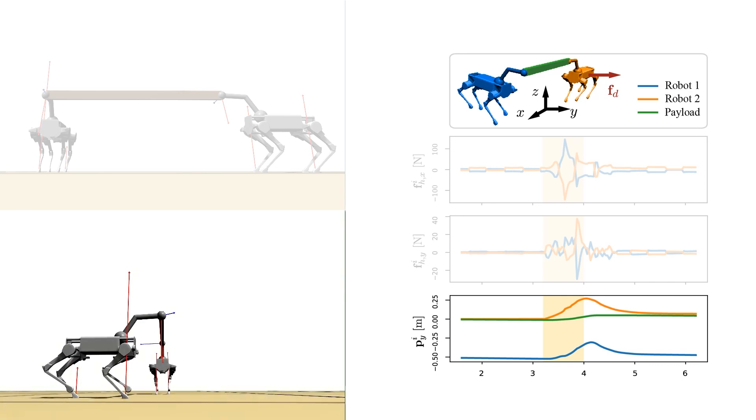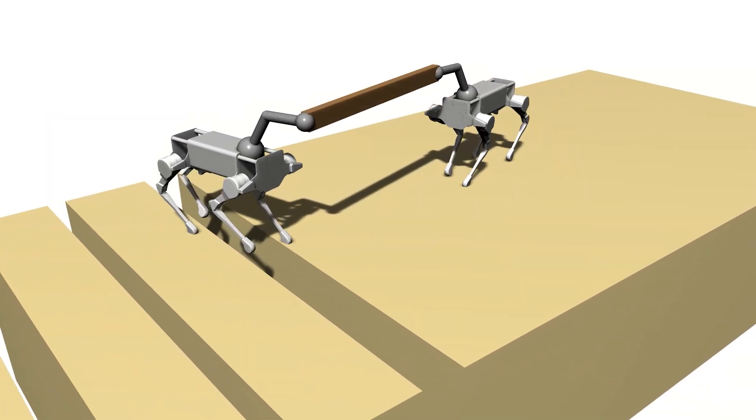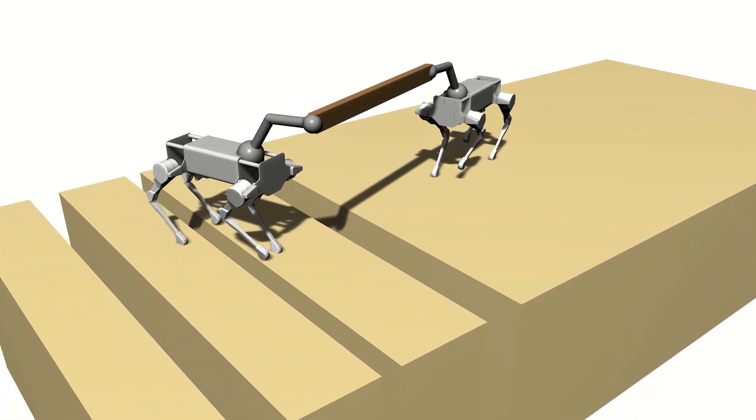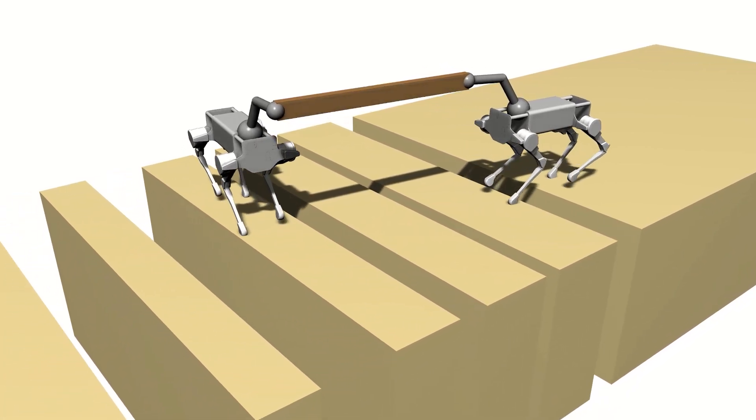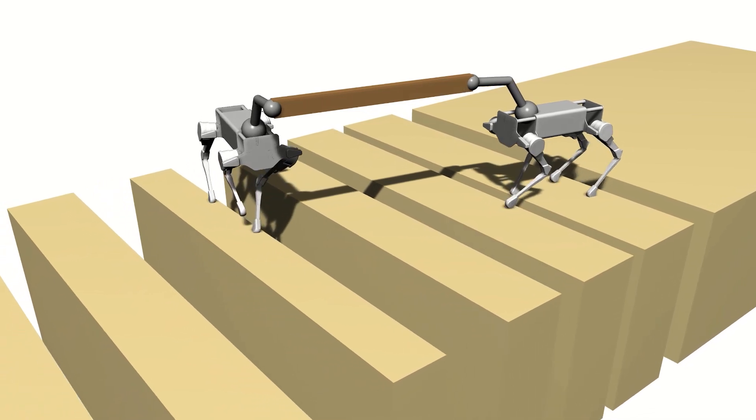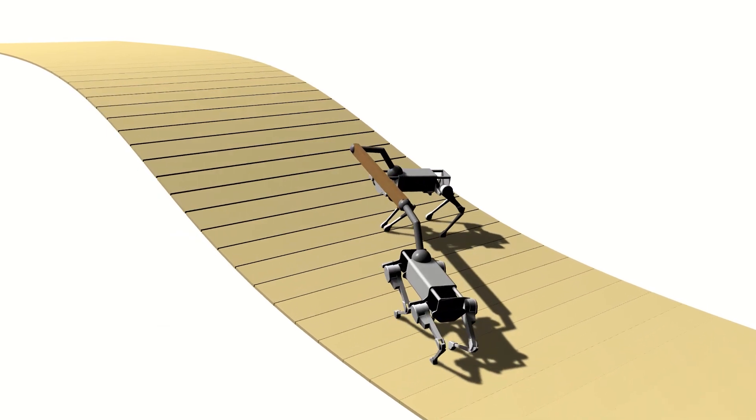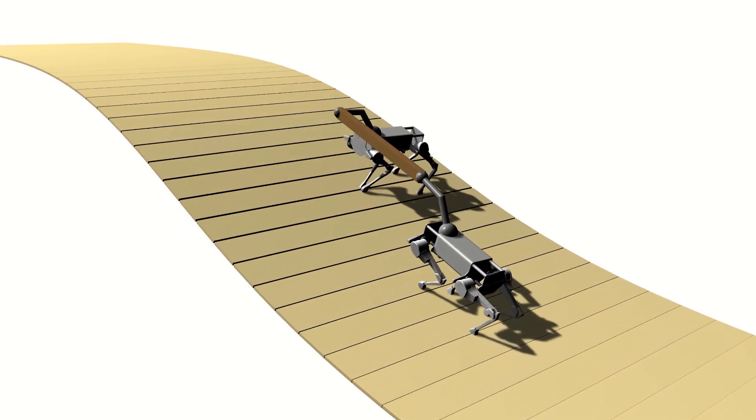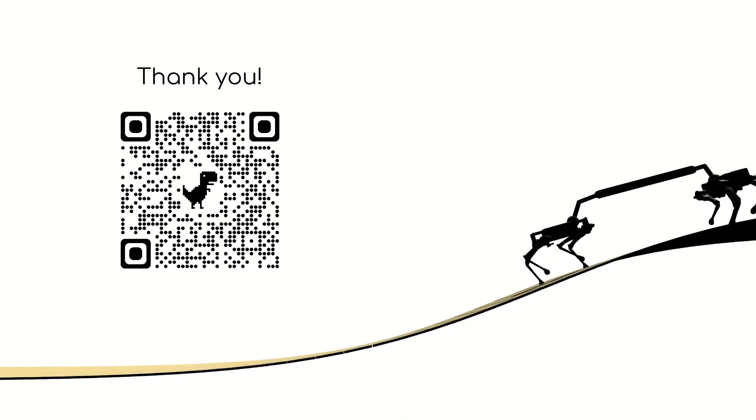Finally, we demonstrate the advantage of optimizing for stepping locations by performing collaborative manipulation on different parameterized terrains, such as a terrain with ditches, a ramp, and a ramp. You can access the paper by scanning this QR code. Thank you for your attention.